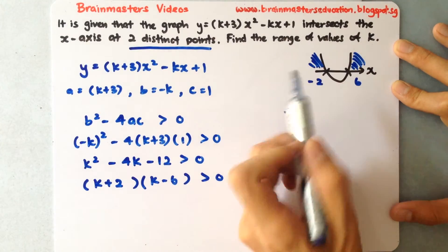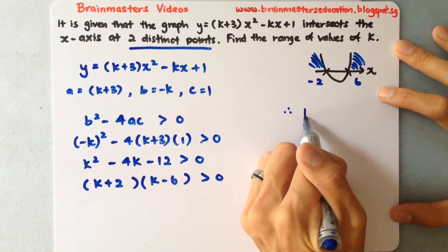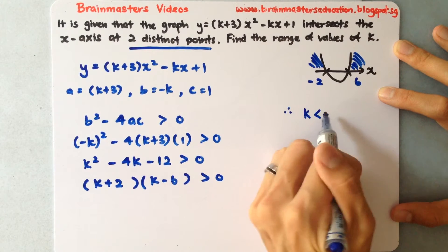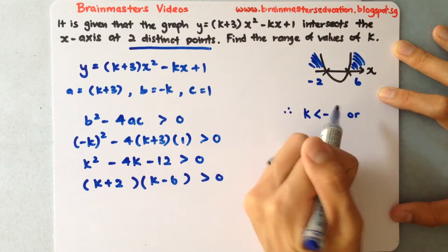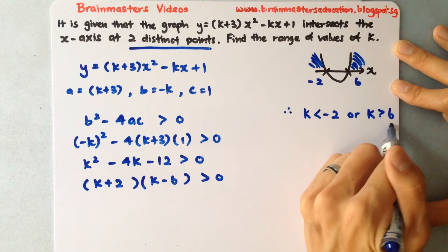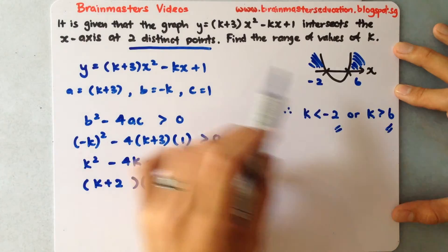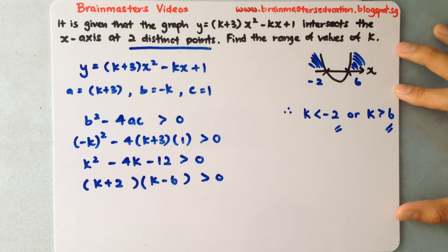It must be above, so k should be less than negative 2 or k should be greater than 6. So this is the range of values for k which will satisfy the equation to get to this distinct point.